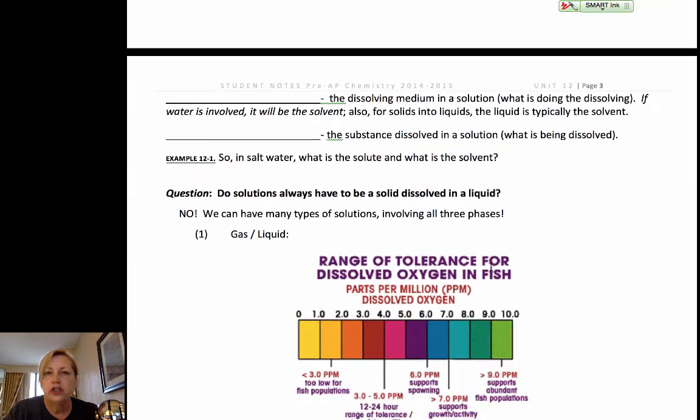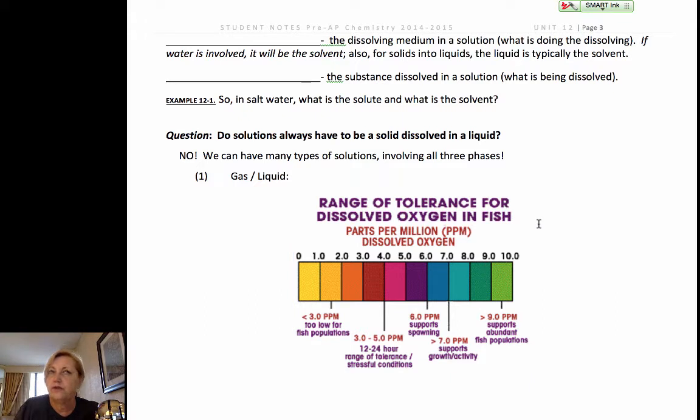There are two key terms with which you want to familiarize yourselves. We're focusing now on solutions only, homogeneous mixtures or solutions. The dissolving medium is called the solvent, and the substance being dissolved is called the solute. If it's especially solid-solid, typically the solvent is the one that's present in the greatest amount. The solute is the one present in the least, with the exception of water.